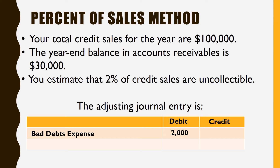The credit goes to the allowance for bad debts — that contra asset account, just like accumulated depreciation. It has a credit balance normally, but it goes on the asset side of the balance sheet right after accounts receivable, and we subtract it to get net accounts receivable. It's also two thousand dollars. So the journal entry is: debit bad debt expense, credit allowance for bad debts for the same amount. Those two accounts are always the adjusting journal entry — always debit bad debt expense, credit allowance for bad debts.